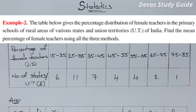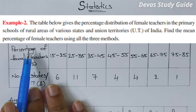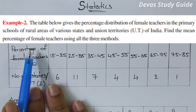The table gives the percentage distribution of female teachers in the primary schools of rural areas of various states and union territories of India. Find the mean percentage of female teachers using all three methods.